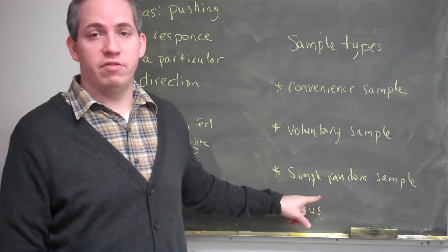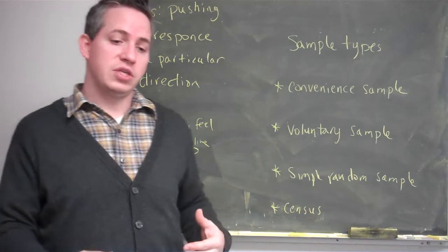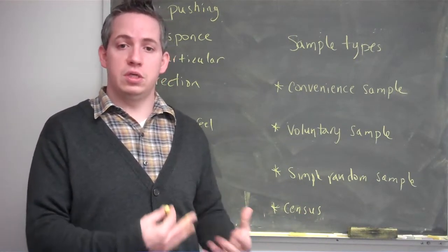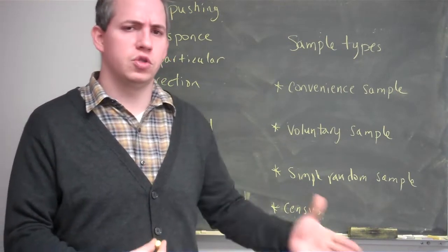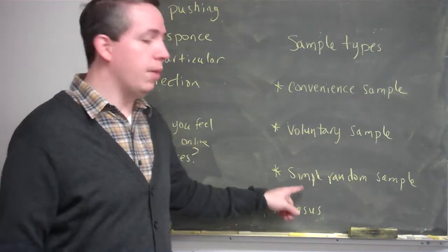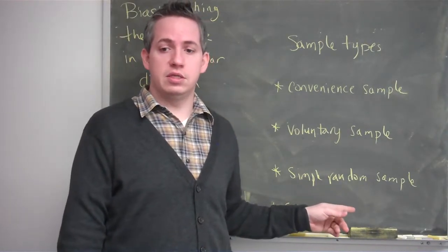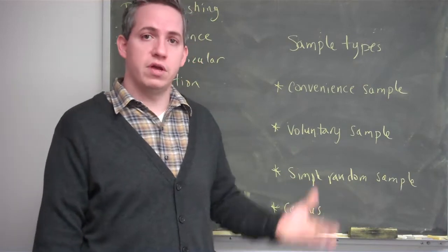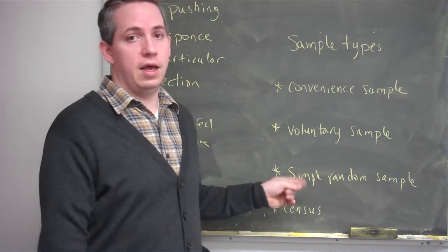Simple random sample does not have bias, because we're actually giving everybody a chance of being chosen in our sample. There's no particular direction it's going to be pushed in. It might not be the same as the entire population, and that's what we call variability, but it will have no bias.